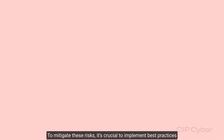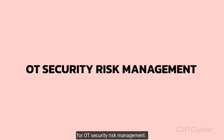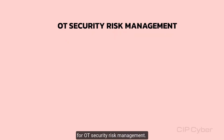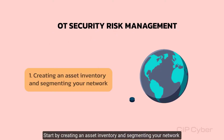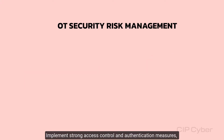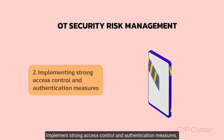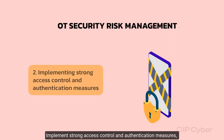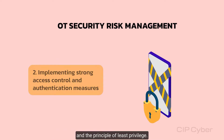To mitigate these risks, it's crucial to implement best practices for OT security risk management. Start by creating an asset inventory and segmenting your network to isolate critical assets from other systems. Implement strong access control and authentication measures, including strong passwords, multi-factor authentication, and the principle of least privilege.